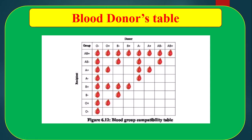From the table we are clear that positive blood groups may receive from both positive and negative blood groups. Negative blood groups can receive from only the negative groups, on the basis of the previous table.